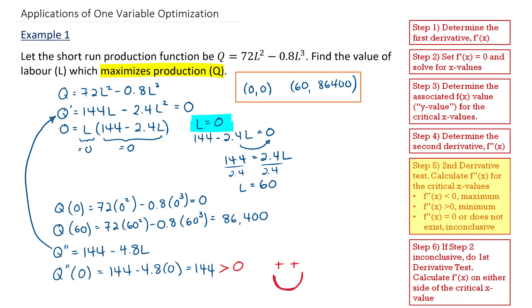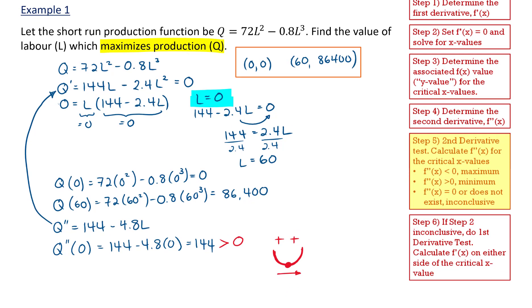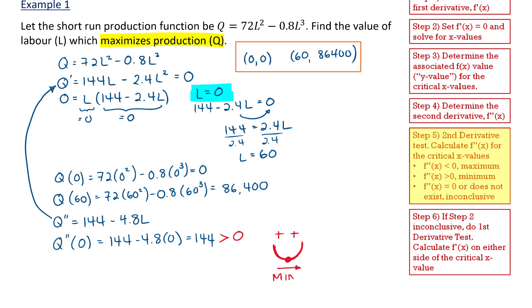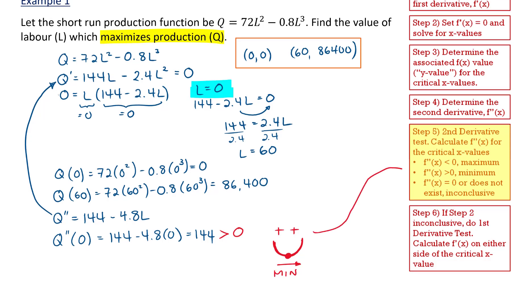Now this second derivative of 144 is positive. It's greater than 0. So what we're looking at when we have a positive second derivative is a function that is concave up in that region. And so the critical point where that slope is 0 is a minimum. And we can also see that in that listing here. When F double prime of X is greater than 0, we have a minimum.